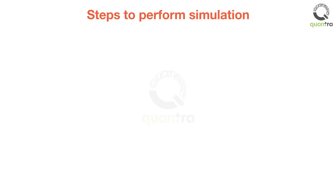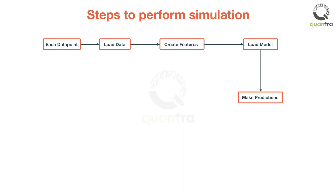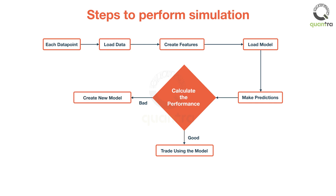Let us understand the process of simulation in a stepwise manner. For every data point in the simulation data we perform the following actions: load the past data; create the features and target data sets on simulation data; load the pre-trained model from the local machine; make predictions on the feature data set using the model; calculate the accuracy of the model on simulation data. If the model's performance is good, then use it to trade. Else, create a new model and save it, and do not trade at that time period. This model will be used to make predictions for the next data point.